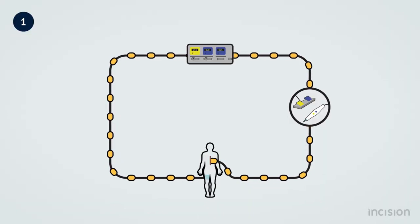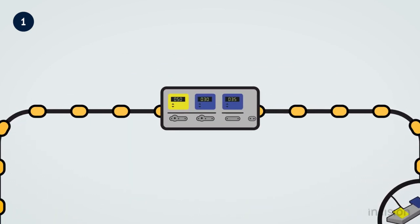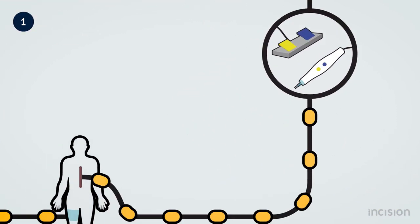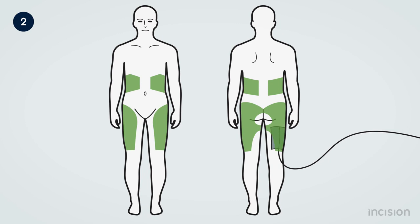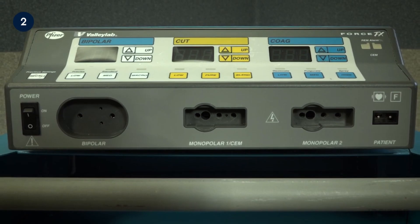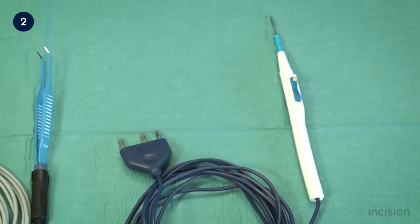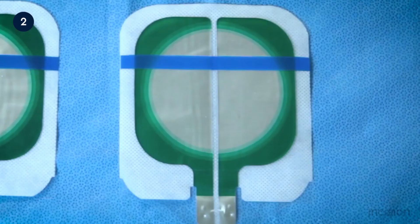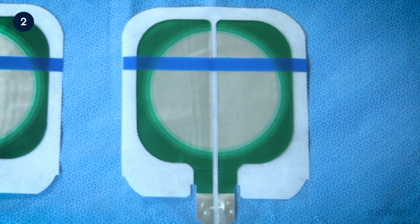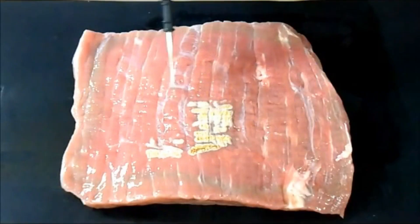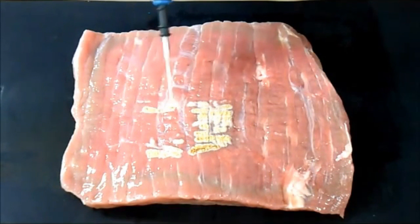Electrical current flows when electrons from one atom move to an adjacent atom through a circuit. Heat is produced when electrons encounter resistance. For current to flow, a continuous circuit is needed. In the operating room, the circuit is composed of the patient, the electrosurgical generator, the active electrode, and the return electrodes. The electrosurgical unit is the source of the voltage. Electrical energy is converted to heat in tissue as the tissue resists the flow of current from the electrode.